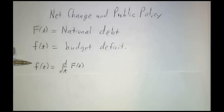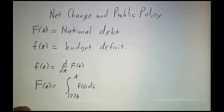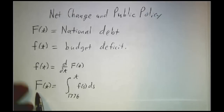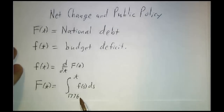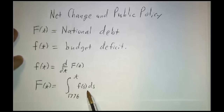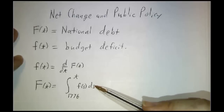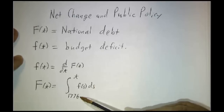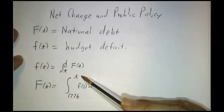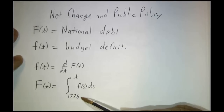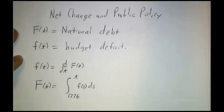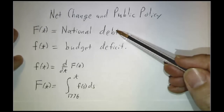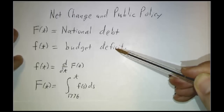If we run a deficit of $1 trillion, next year we'll owe $1 trillion more than we owe this year. On the other hand, the current national debt is the accumulation of all of the deficits from 1776 to today. That is an integral — you don't even have to think about an antiderivative, think of it as an integral. It's the total amount of stuff between 1776 and today — an integral thought of as a function of its endpoint. So the debt is the integral of the deficit, and the deficit is the derivative of the debt.